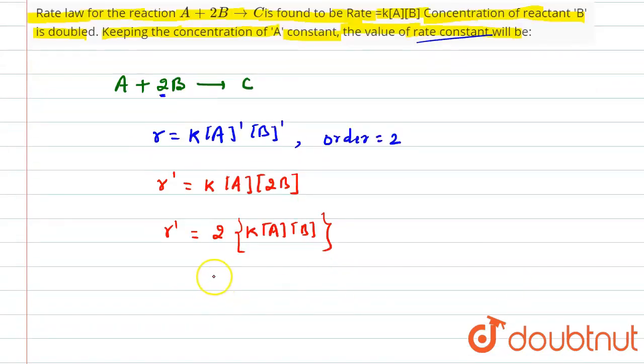Means k remains constant. So if we increase the concentration of B double and A remains constant, in that case the rate of the reaction will be double but rate constant will remain same.